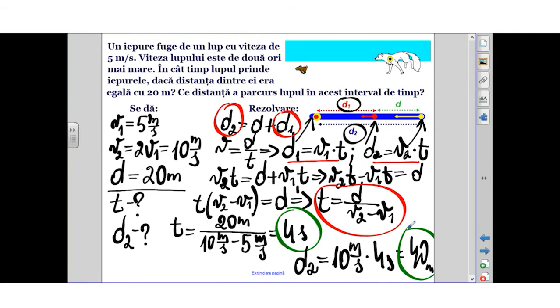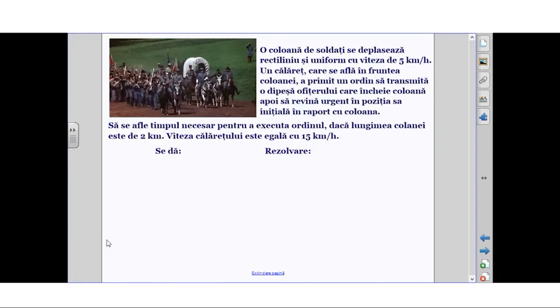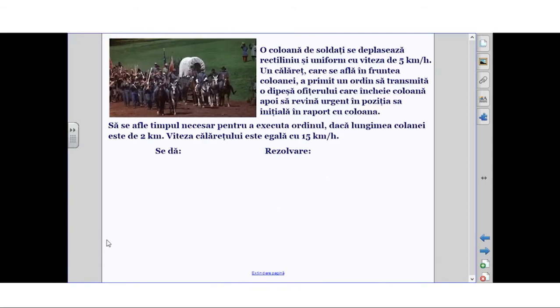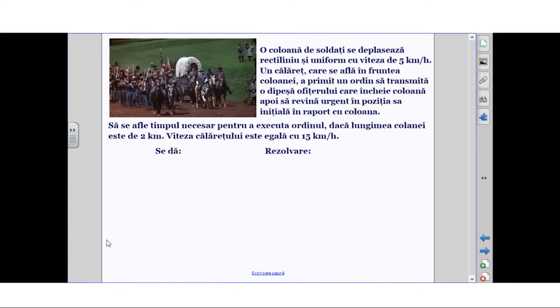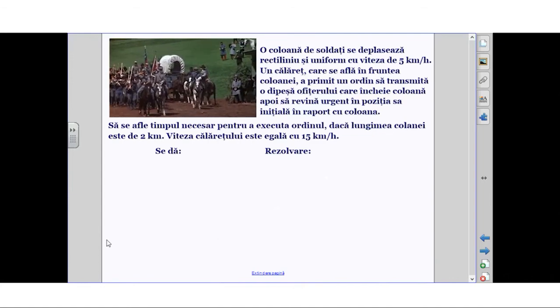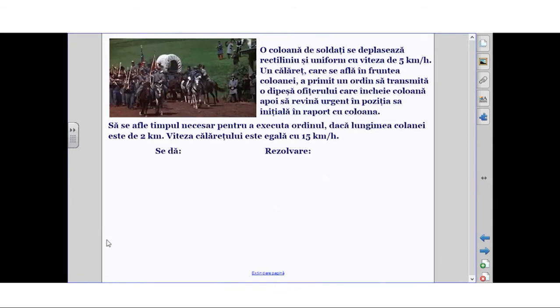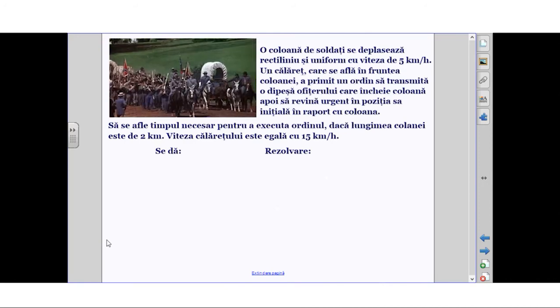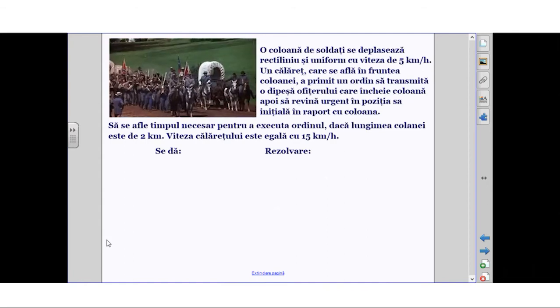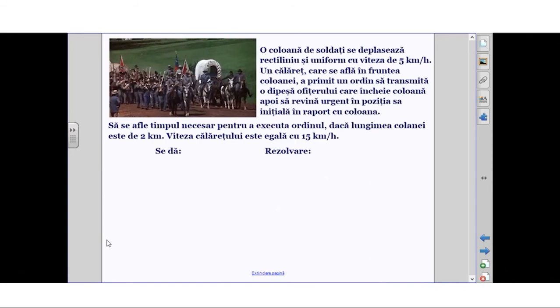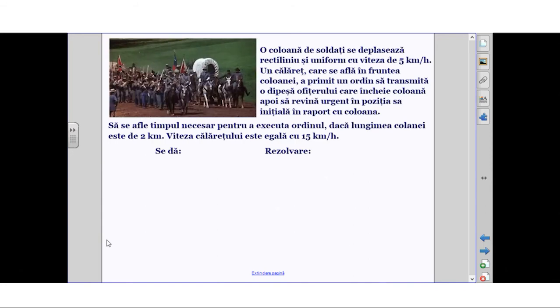The next problem. In the next problem, creating a schematic representation is very important, namely from this representation we will be able to express some physical relations that will help us obtain the result we seek. We have the following problem: A column of soldiers moves rectilinearly and uniformly with velocity 5 km/h. A horseman who is at the front of the column receives an order to transmit a message to the officer at the end of the column, then urgently return to his initial position at the front of the column.